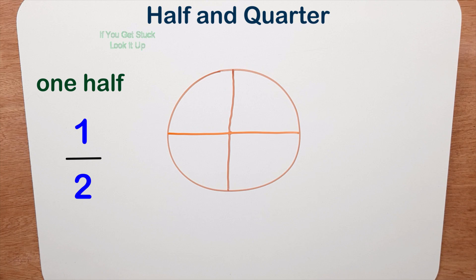So if I want to work out half, I divide it into two. And if I want to work out quarters, I divide it into four.